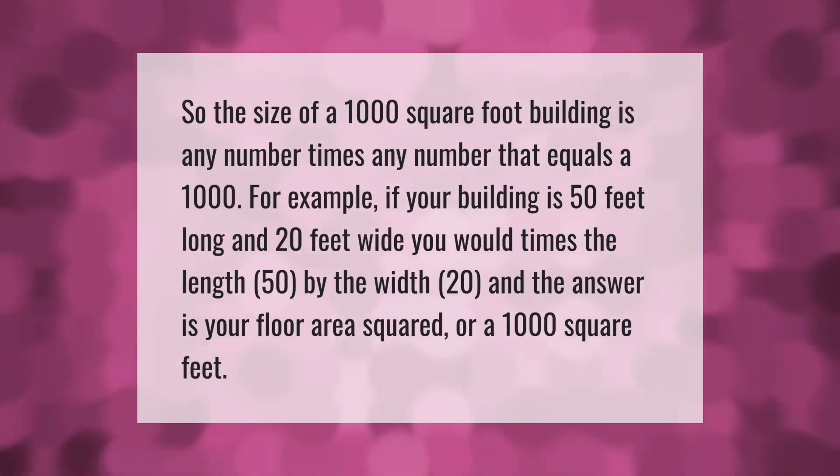So the size of a 1000 square foot building is any number times any number that equals 1000. For example, if your building is 50 feet long and 20 feet wide, you would multiply the length (50) by the width (20), and the answer is your floor area squared, or 1000 square feet.